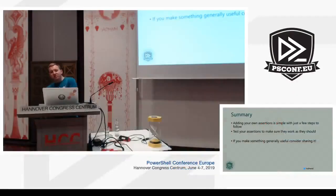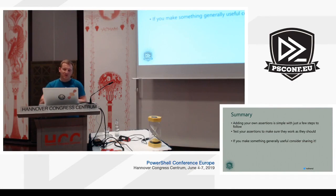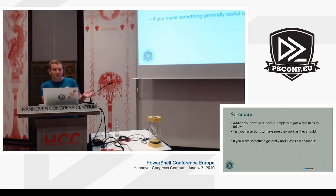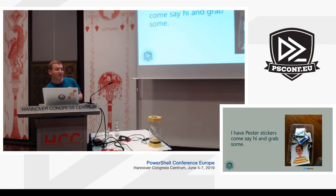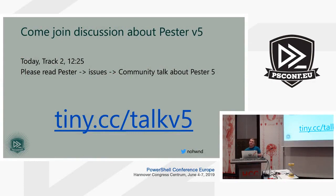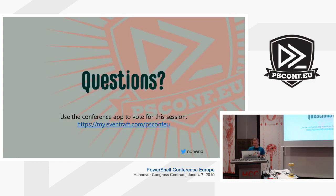In summary: adding your own assertions is reasonably simple with just a few steps. You should definitely test your assertions to make sure they work as they should. If you make something generically usable, consider sharing it — it can be imported into Pester or shared as your own module. I have Pester stickers if you want them. During lunch there will be a discussion about Pester version 5 in Track 2, and there's a long document describing all new features — go to pester issues and look for the community talk, or go to tiny.cc/talkv5.